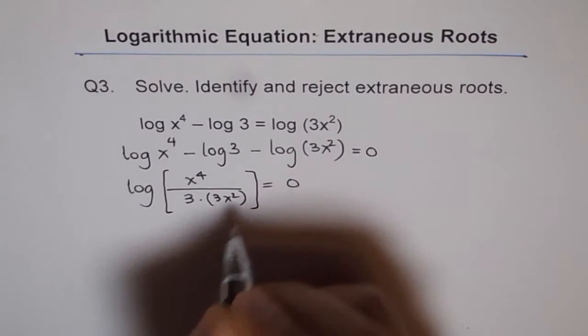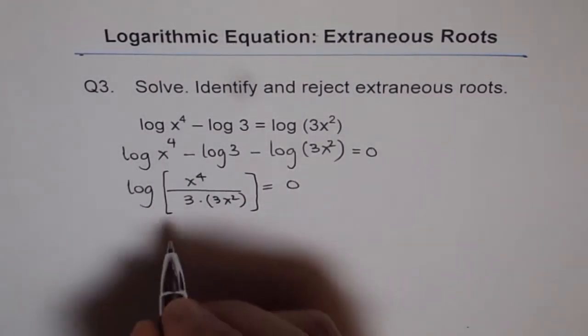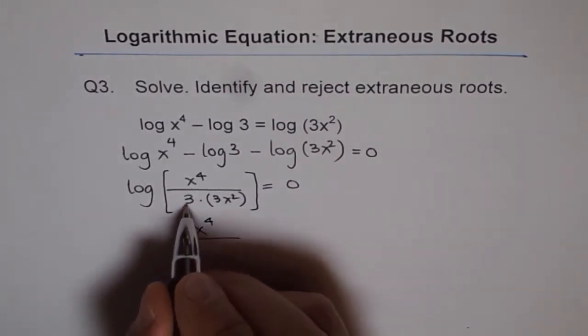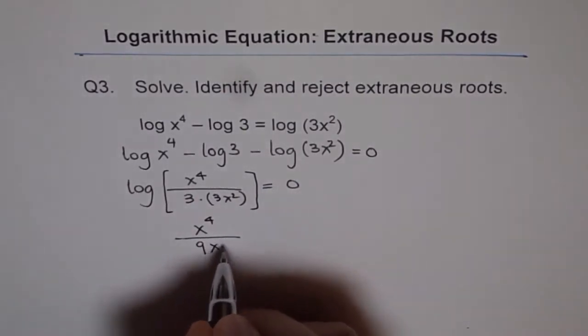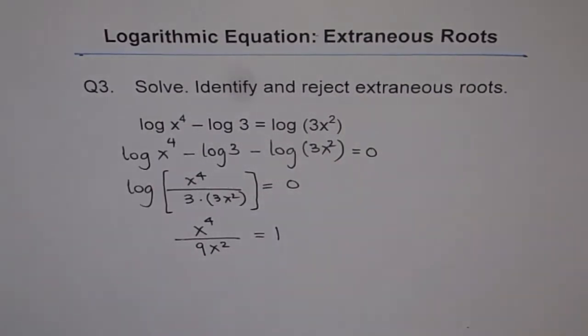So we have this function here and this is to the base 10. Now 10 to the power of 0 is 1 and therefore we get x to the power of 4 over 3 times 3 is 9, 9x squared equals to 1. So that is the equation we have.